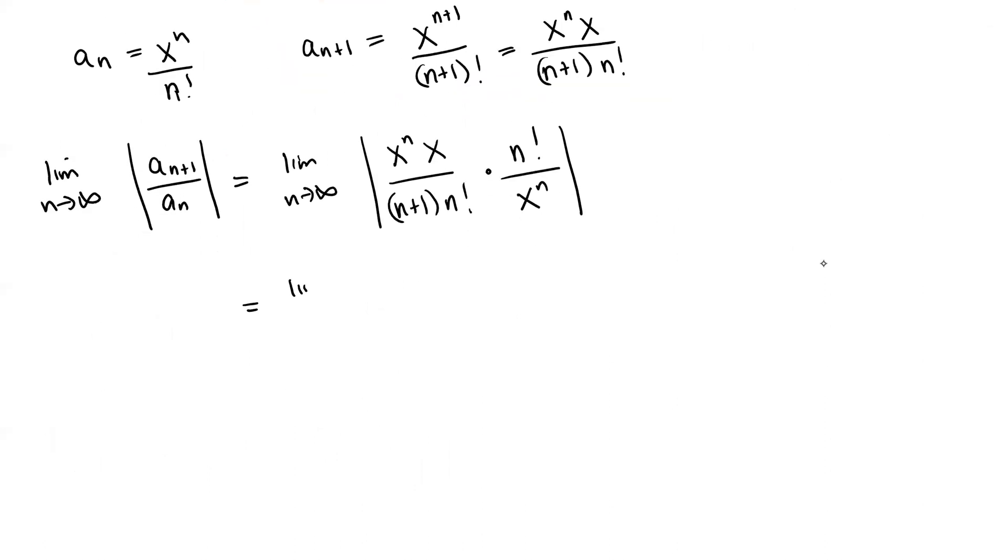So let's go ahead and simplify things a bit, cancel some stuff out. The x to the n's cancel out, the n factorials cancel out, and that just leaves us with x over (n+1) within the absolute values.